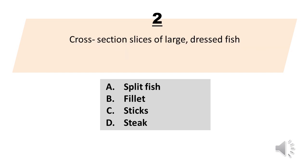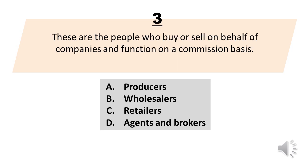Cross section slices of large, dressed fish. A. Split fish. B. Filet. C. Sticks. D. Steak. The answer is Letter D, Steak.